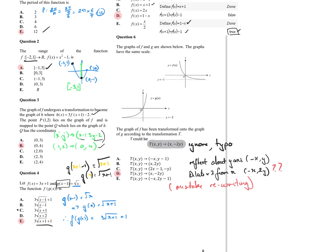They've got the same scale. The graph has been transformed — so what's the transformation that's occurred? We can see there's been a reflection about the y-axis, so that's negative x. Then the y-value asymptote has moved down twice as far — it hasn't shifted down one unit because my intercept hasn't changed. That's a dilation factor; dilate by 2 from x. There's a typo there of some sort, which makes it a bit tricky.